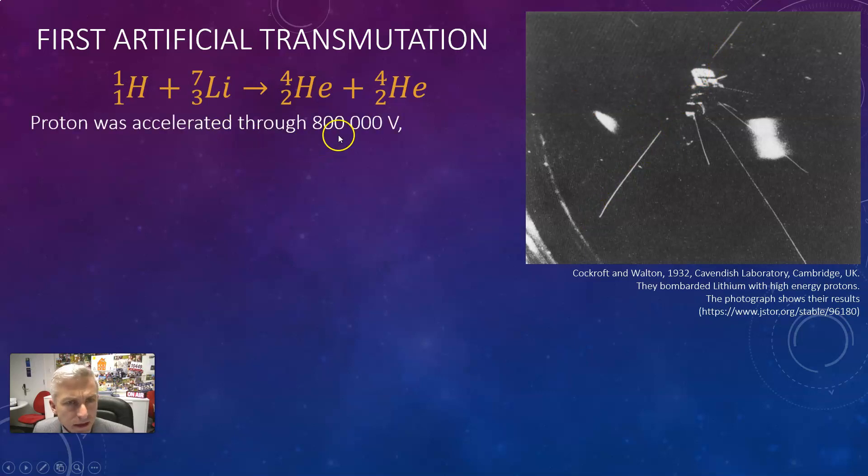The proton has been accelerated through 800,000 volts and so it has a kinetic energy of 0.8 mega electron volts. Don't forget the charge on a proton is the same as the charge on an electron except positive.